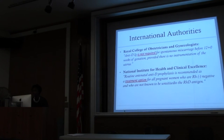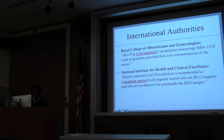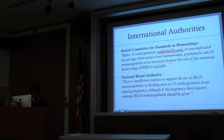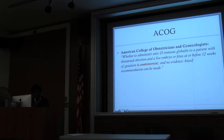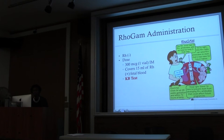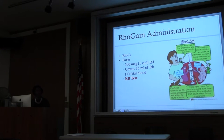A few international authorities say the same thing: the Royal College, the National Institute of Health and Clinical Excellence, and the British Committee for Standards in Hematology and the National Blood Authority. However, the U.S. authority says it is controversial, leaving this practice open to interpretation in the U.S. The dose of RhoGAM is 300 micrograms — one vial given IM — and typically that covers about 15 mL of RH-positive blood.